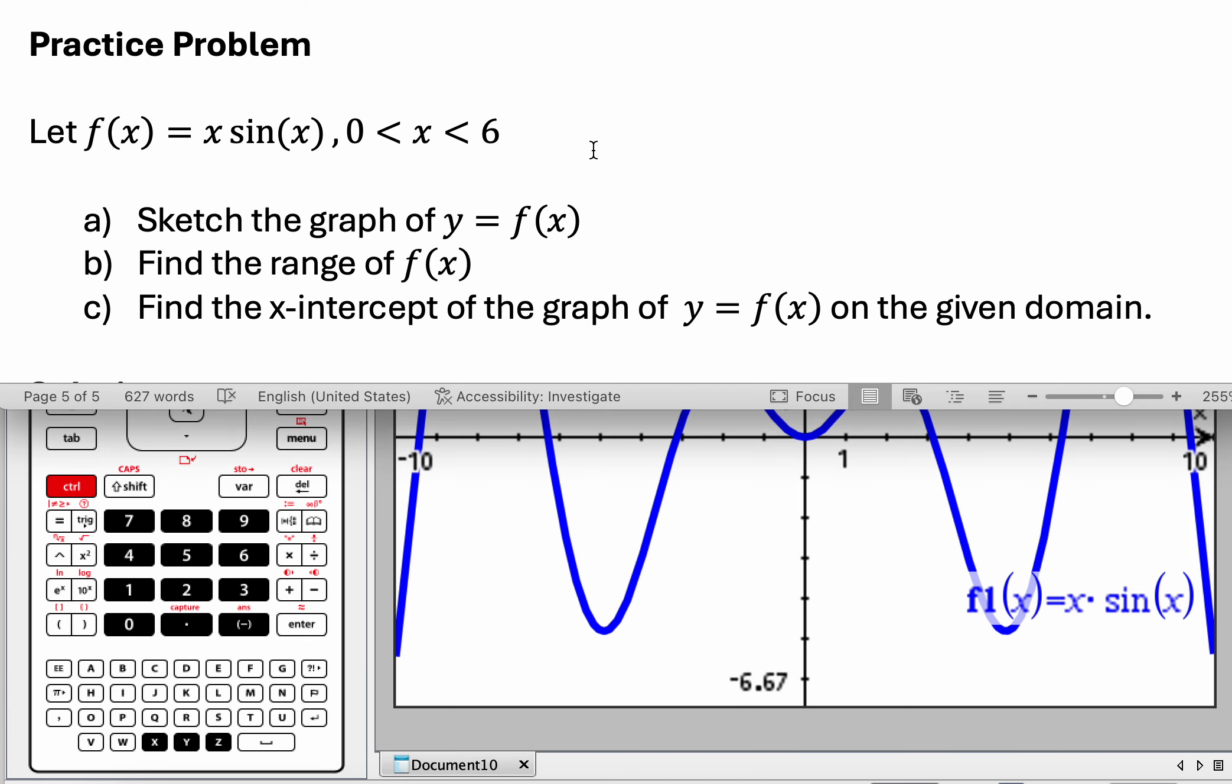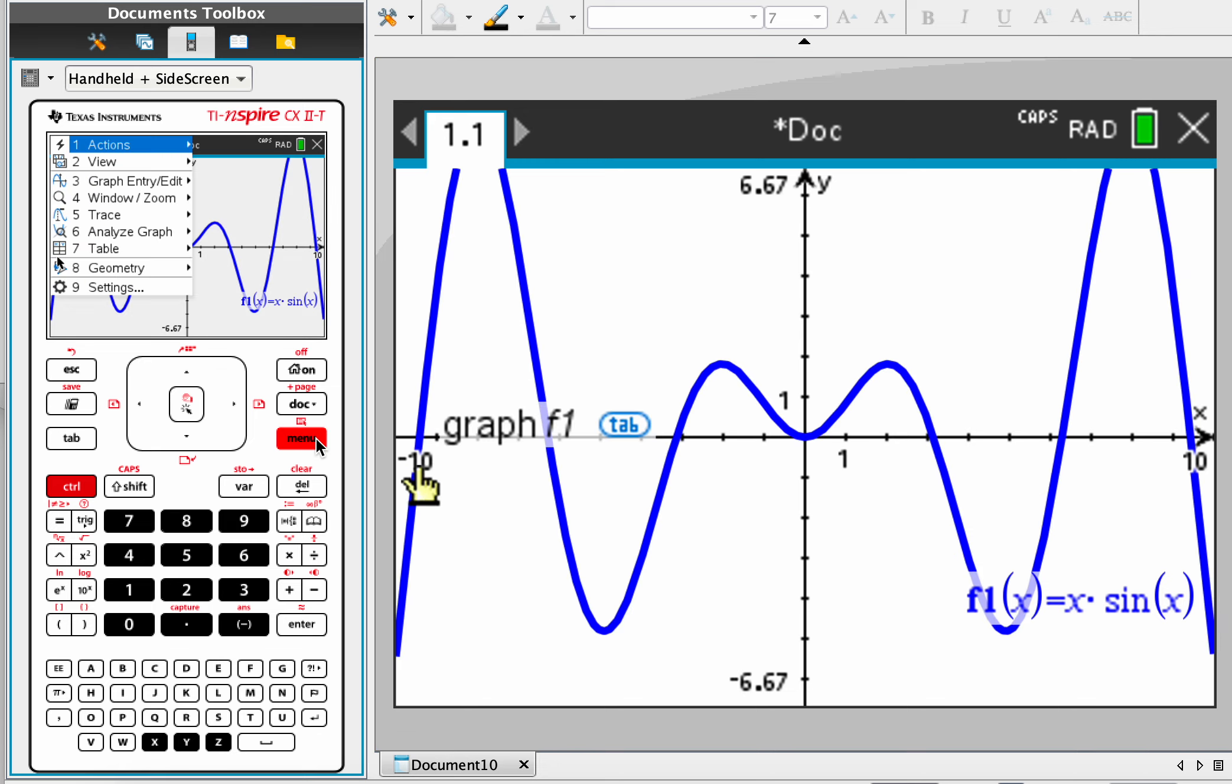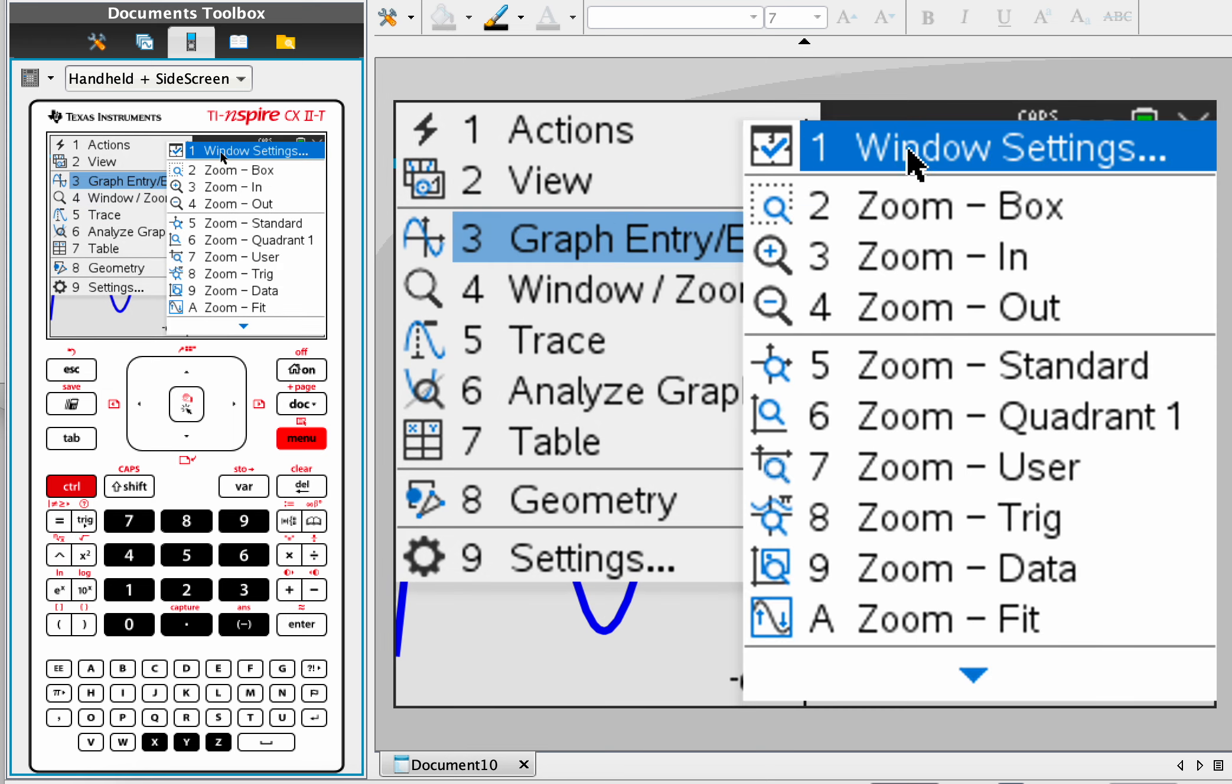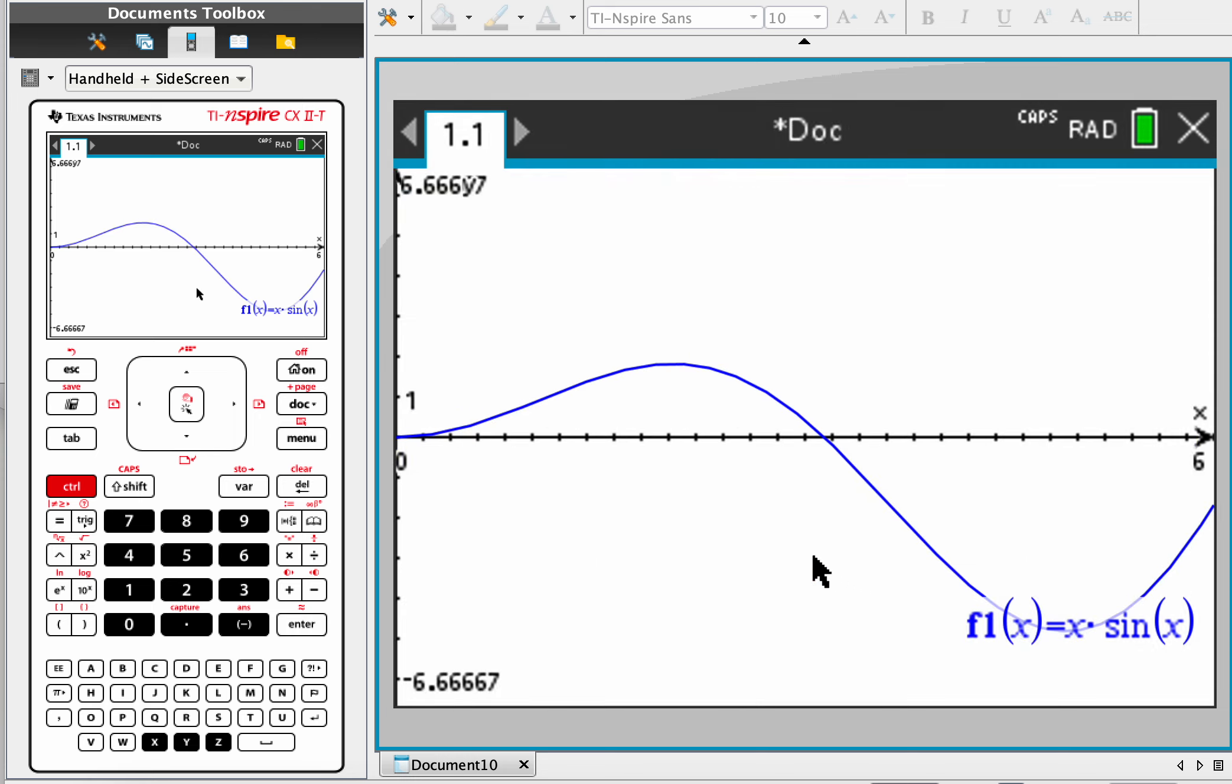Now, the domain says zero to six. Okay, so we can change this. Well, I can't double click because it's over that number right now. But let's go to menu, window zoom. Okay, and I will put zero to six, just like that. Okay, so we see exactly what we're looking at.